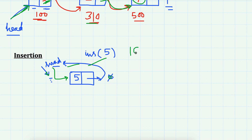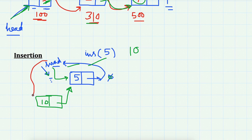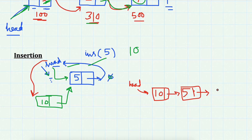I again want to insert 10. Now I will create another node, store 10 here, make its next point to the earlier node — that is whatever head is pointing to — and then make head point to the newly created node. After two insertions, head is pointing to 10, 10 is pointing to 5, and 5 is pointing to nil.